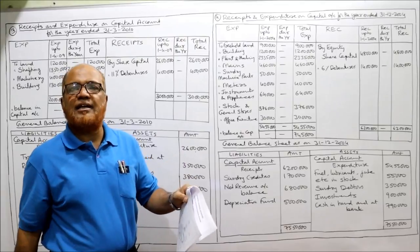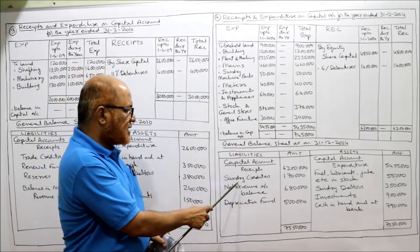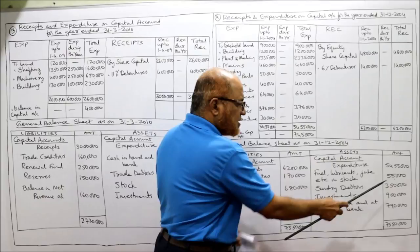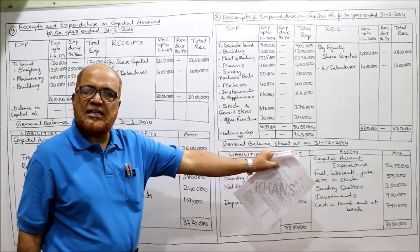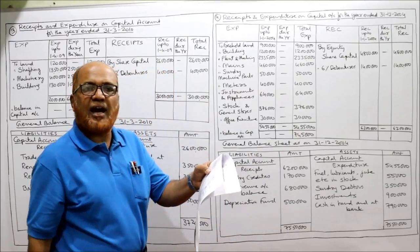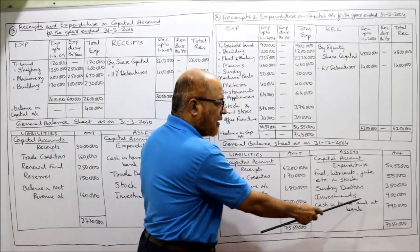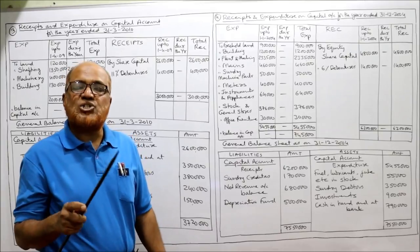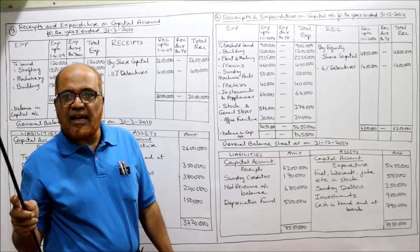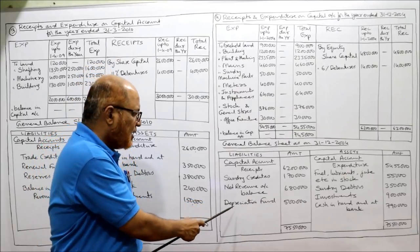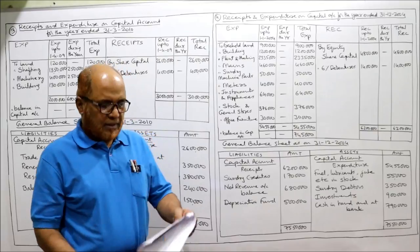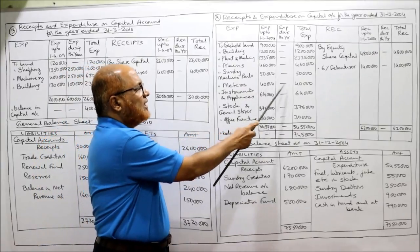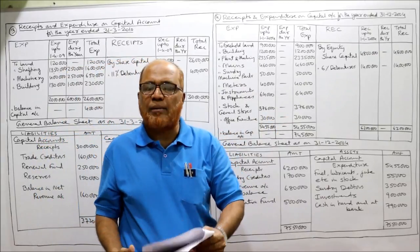Sundry creditors (1 lakh 70 thousand) go on the liability side of the general balance sheet. Sundry debtors (3 lakh 50 thousand) and investments (9 lakh) go on the asset side. Cash in hand and at bank (7 lakh 90 thousand) is on the asset side. The balance transferred from the net revenue account (6 lakh 80 thousand) goes on the liability side. Meters (40 thousand) are a fixed asset on the expenditure side. All items from the trial balance have been accounted for.